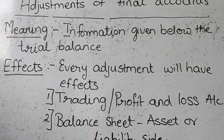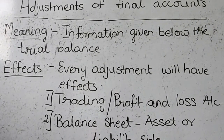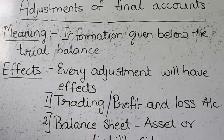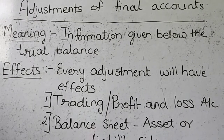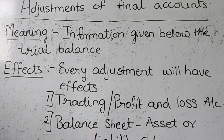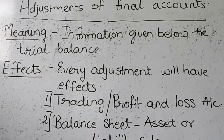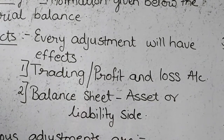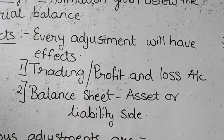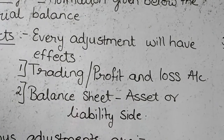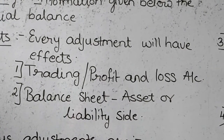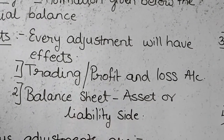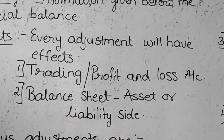These adjustments are given in the form of additional information below the trial balance. Like other items of the trial balance, we have to give effect to these adjustments, but the only thing is that every adjustment will have two effects. The first effect will be either in the trading account or in the profit and loss account, and the second effect will be in the balance sheet either on the asset side or on the liability side. So every adjustment is going to have two effects.